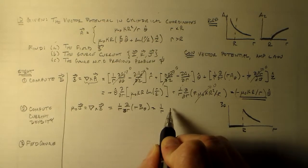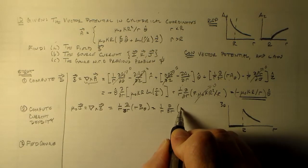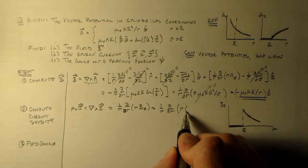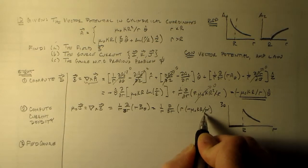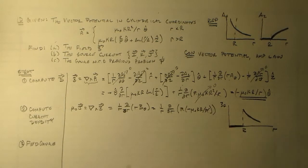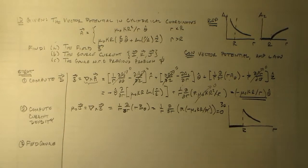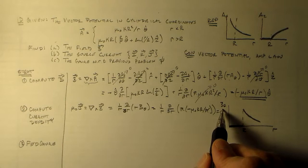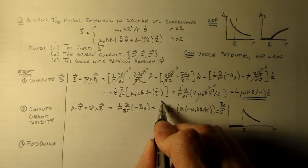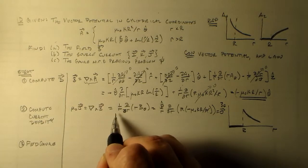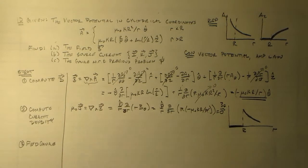So we have one over r d dr of r times minus mu naught k r over r. That guy cancels, and we have a constant times the derivative, which is zero. That means basically there is no volume current density.